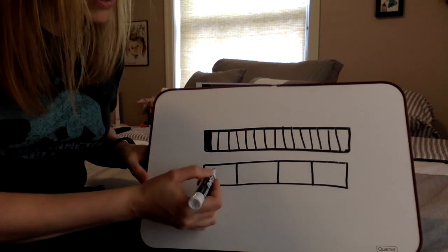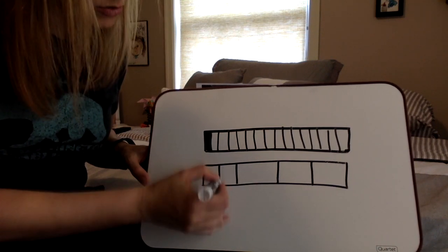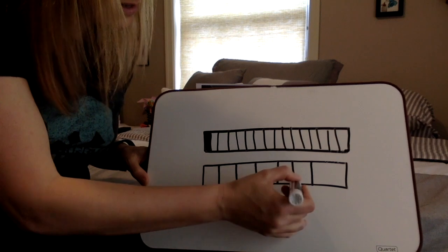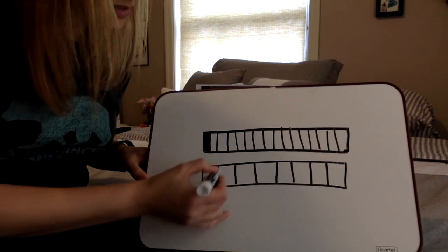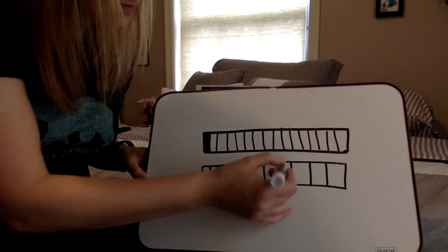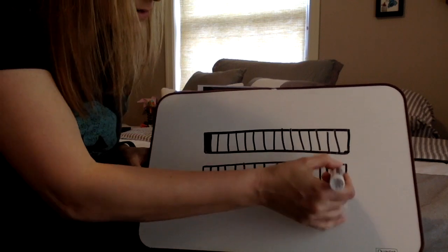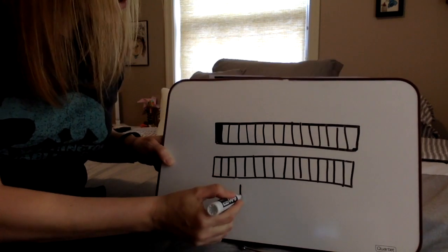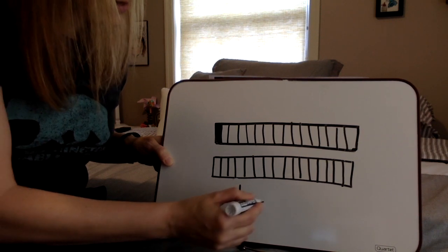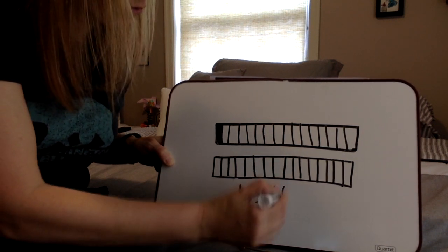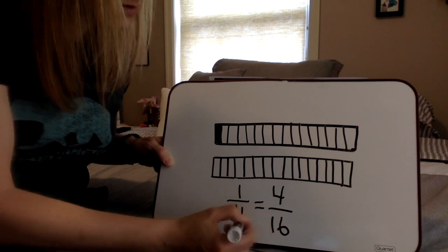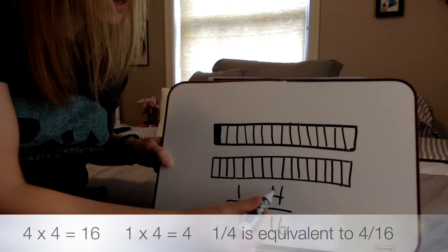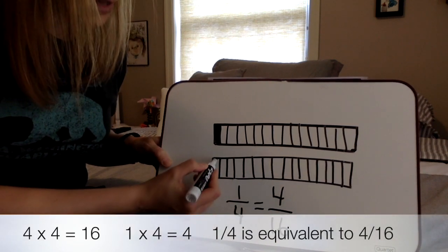But knowing that they might roll a sixteenth, they probably should do the same thing I did and divide theirs into sixteenths. From here, they can then say one fourth is equivalent to four sixteenths because four times four is sixteen. One times four is sixteen. We talked about this in our last few lessons.